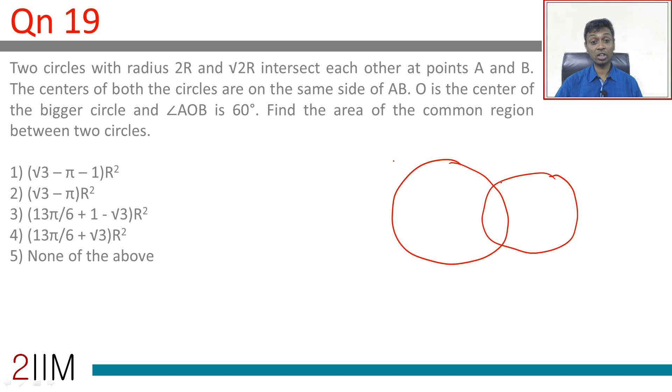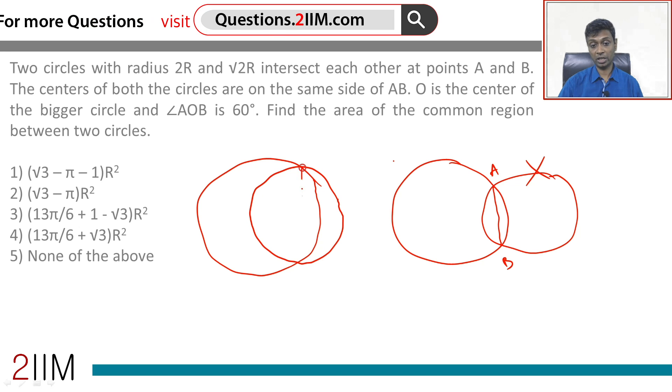The centers of both the circles are on the same side of AB. So, clearly this diagram is wrong, we are looking for a diagram like this, this being A, B.